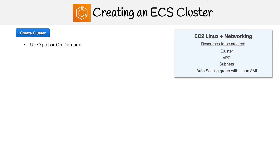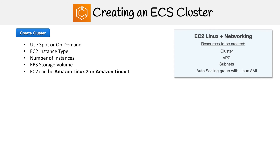You have to choose whether you want to be spot or on-demand. With ECS, you can save money with spot because if you're running background tasks, it's not a big deal for those to get interrupted. Then you're going to want to choose the EC2 instance type, the number of instances, and the EBS storage volume. You can also choose whether you want to use Amazon ECS-optimized AMI options, which both have Docker installed on them.